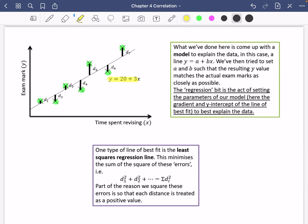I've given us the equation of the regression line here. What I've said is what we've done here is we've come up with a model to explain the data. In this case, the way we're going to explain this data is this line I'm tracing out. And that line is Y equals A plus BX or Y equals 20 plus 3X. We then tried to set A and B such that the resulting Y value matches the actual exam marks as closely as possible. The regression bit is the actual act of setting the parameters, the A and B parts of our model.